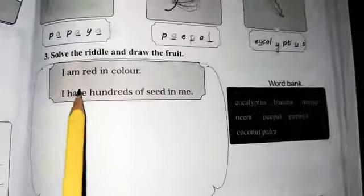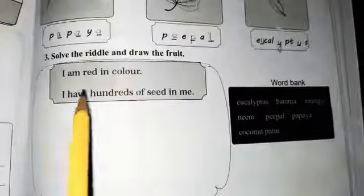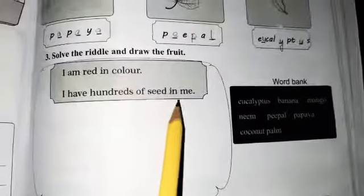Okay, dear friends. Complete this question. And question number three: solve the riddle and draw the fruit. There is a riddle. I am red in color. I have hundreds of seed in me. Which fruit is this, students?